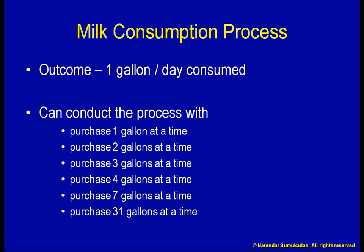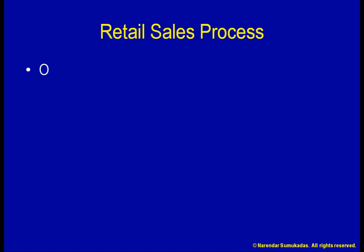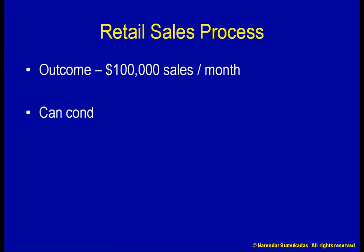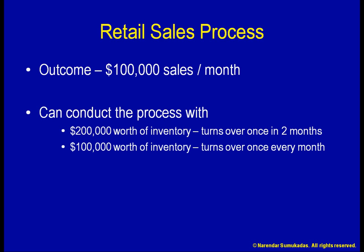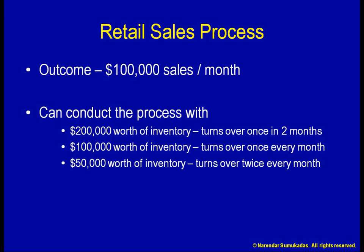Using the same principle, say I am conducting a retail process that produces $100,000 per month of sales. I can conduct the process using $200,000 worth of inventory — my inventory turns over once every two months. Using a quicker replenishment cycle, I can conduct the same process using only $100,000 worth of inventory, with inventory turning over once every month. Using an even quicker replenishment cycle, I can conduct the same process using only $50,000 worth of inventory, with inventory turning over twice every month.